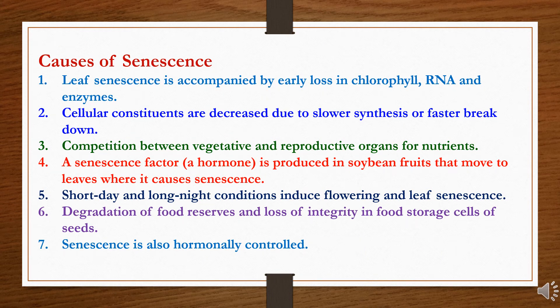Now, the causes of senescence. First, leaf senescence is accompanied by early loss in chlorophyll, RNA, and enzymes. Second, cellular constituents are decreased due to slower synthesis or faster breakdown. Third, competition between vegetative and reproductive organs for nutrients. Fourth, a senescence factor or hormone is produced in soybean fruit that moves to leaves where it causes senescence. Fifth, short day and long night conditions induce flowering and leaf senescence. Sixth, degradation of food reserves and loss of integrity in food storage cells of seeds. Seventh, senescence is also hormonally controlled.